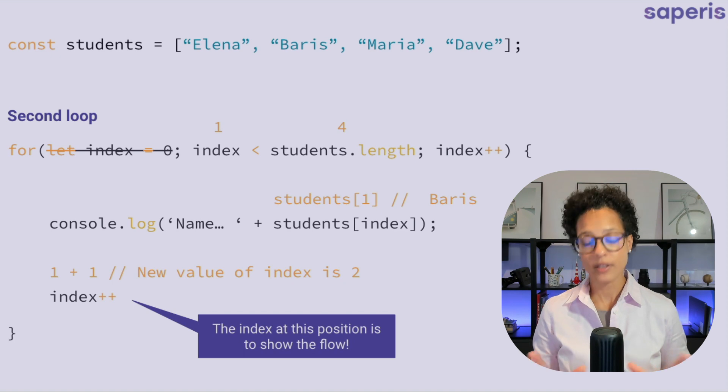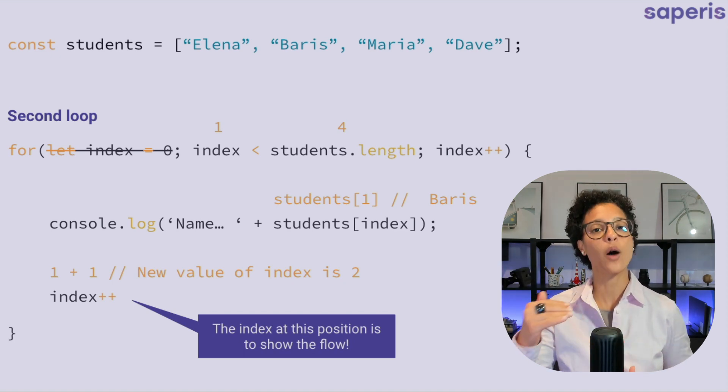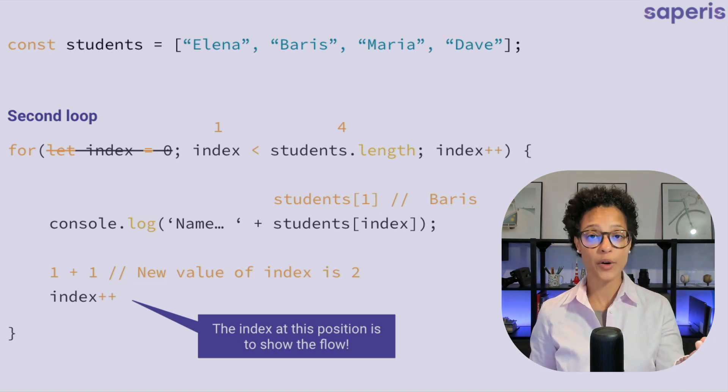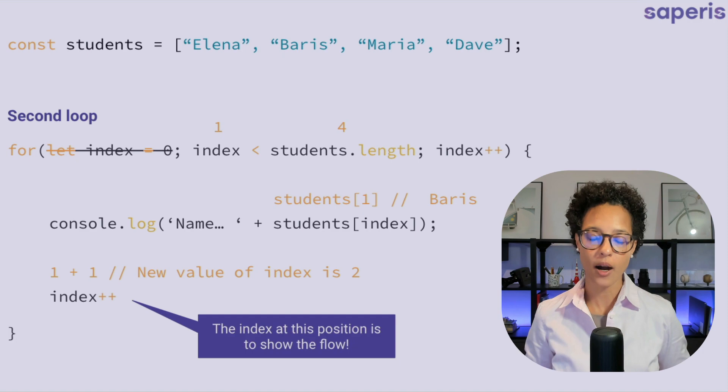it goes down to index plus plus. Again, this is just for your reference. It's not actually written like this. It's written on the top, but just to show you that it's going to add one. And so that's how after every loop, we increase our counter until we reach the point where the value of what is in variable index is no longer lesser than students.length. And that's where our for loop stops.